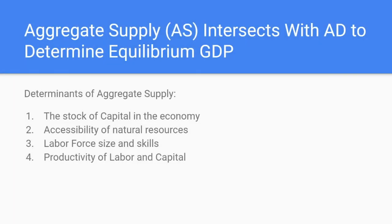Aggregate supply, on the other hand, has a few determinants. It intersects with aggregate demand to determine equilibrium GDP. The determinants of aggregate supply are typically seen as some version of the following four things: some amount of capital, access to natural resources, the labor force, and some variable for the productivity of labor and capital.